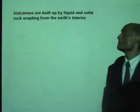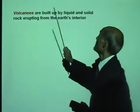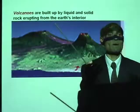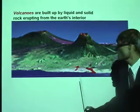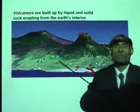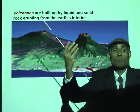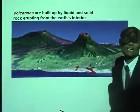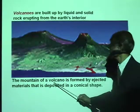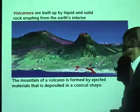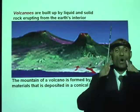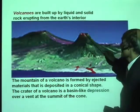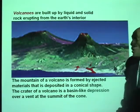We will look at each of these. Volcanoes are built up by liquid and solid rock erupting from the interior of the earth. As the interior erupts, it brings out materials that gradually pile up in a heap, forming a mountain. The mountain of a volcano is formed by ejected materials deposited in a conical shape. The crater of a volcano is a basin-like depression over a vent.